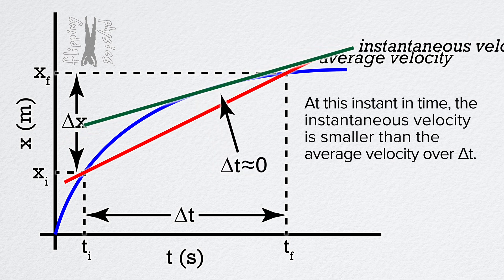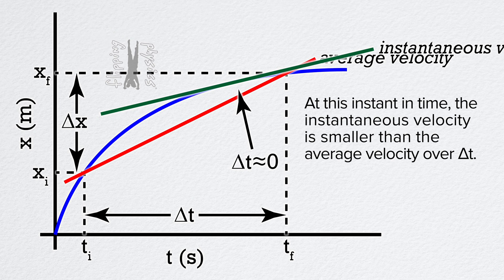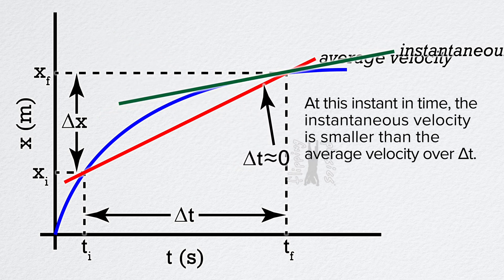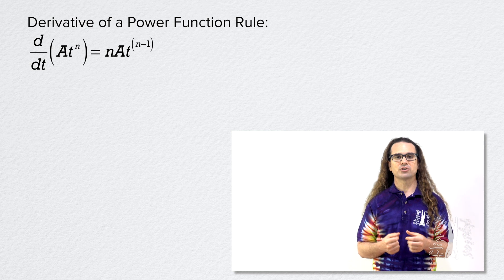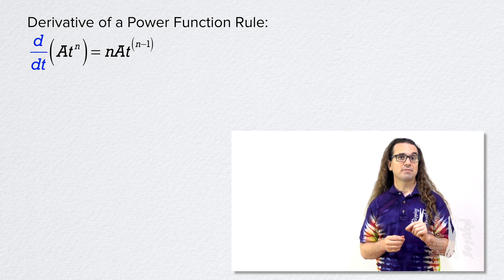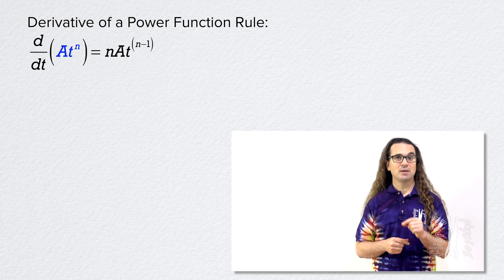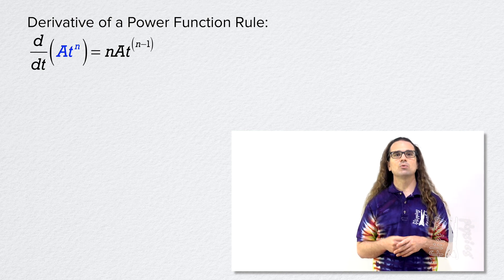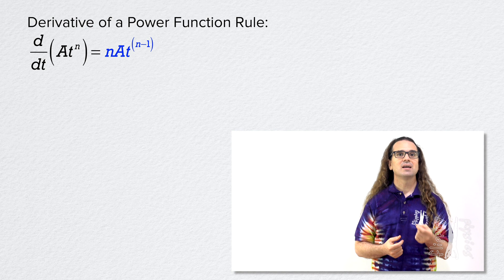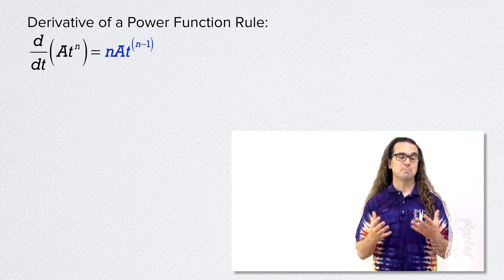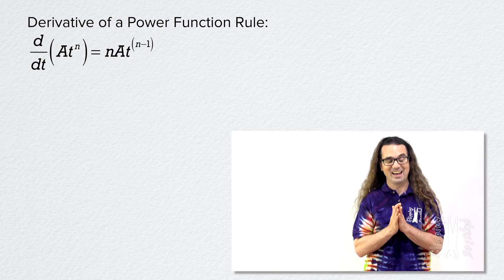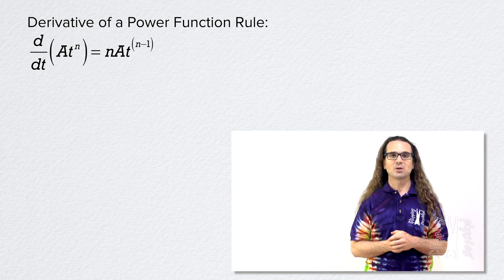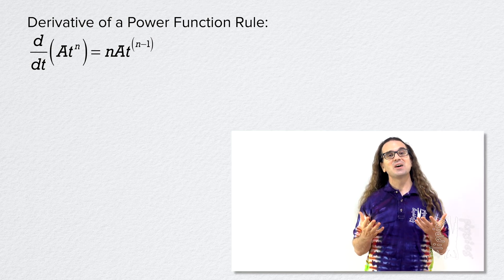Now let's discuss how to actually take the derivative of a function. The derivative rule we will start with is the derivative of a power function rule. It is the derivative, with respect to time, of the function constant a times time to the power n, which equals n times a times time to the power n minus 1. So let's do an example.